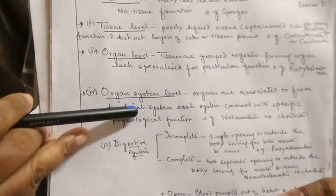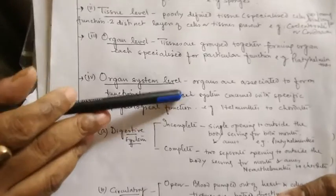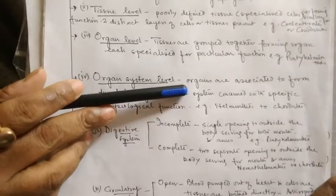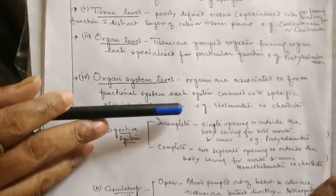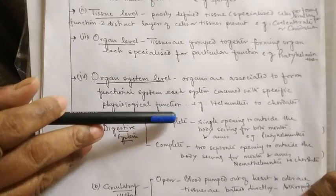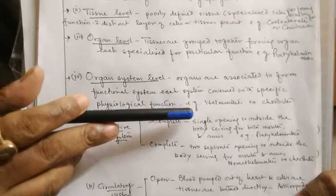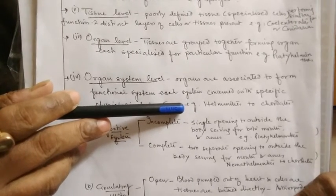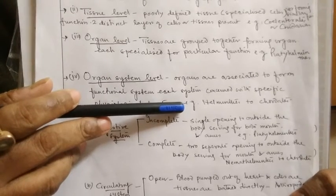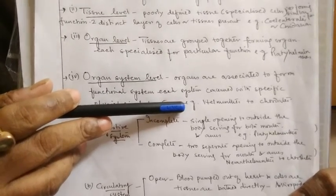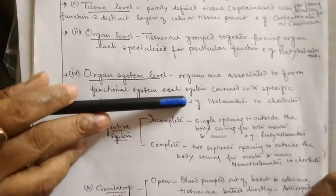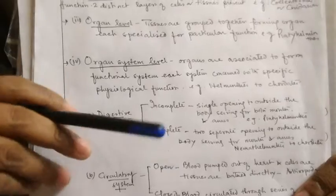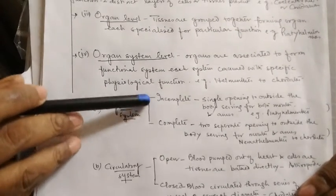Next is the organ system level of organization, where different organs are grouped together to perform a particular physiological function. This we find from Aschelminthes to Chordata. Examples include the digestive system, excretory system, nervous system, and respiratory system — various physiological functions are served by these organ systems.